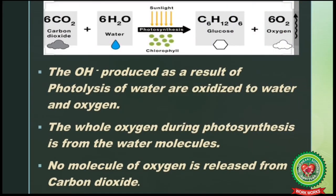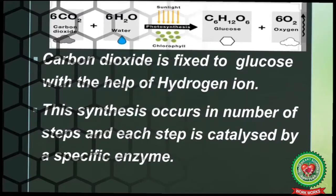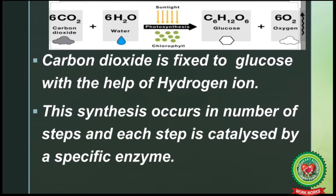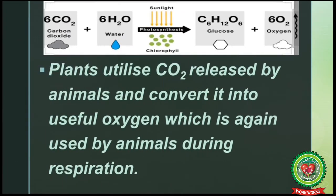The hydroxyl ions produced as a result of photolysis of water are oxidized to water and oxygen. All the oxygen released during photosynthesis comes from water molecules only — no molecule of oxygen is released from carbon dioxide. The carbon dioxide is fixed to glucose with the help of hydrogen ions, and this synthesis occurs in a number of steps, each catalyzed by a specific enzyme.